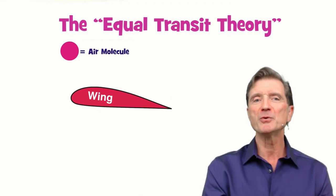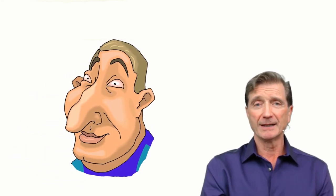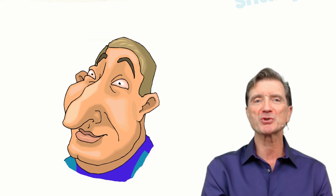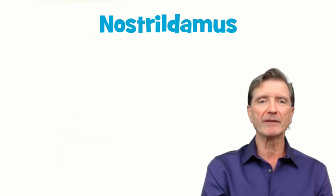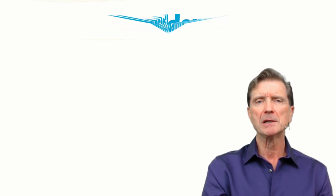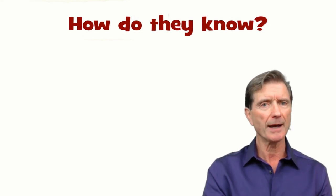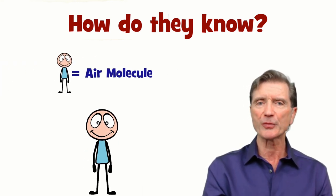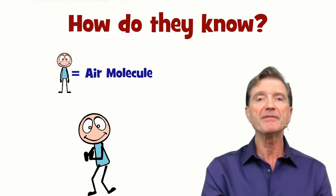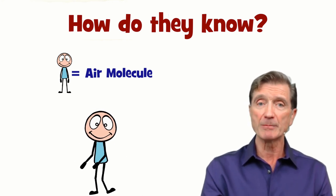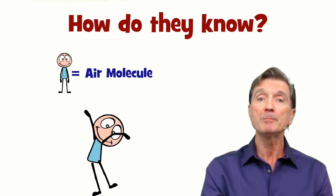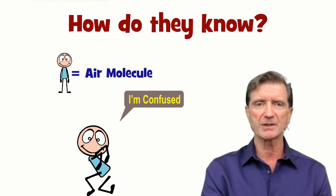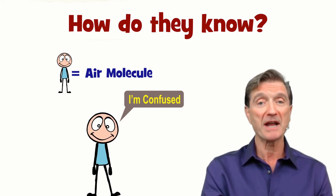Nevertheless, more than a few well-meaning folks raise their noses at this introductory explanation. And like the great visionary Nostril-damus, these individuals predict that everyone will be flummoxed when they ask: 'How do these two parcels of air know that they are supposed to reach the trailing edge at the same time?' You see, without realizing it, our aerodynamic mavens have anthropomorphized two parcels of air, giving them human-like consciousness, thus allowing molecules to comprehend questions and therefore be stumped by them.